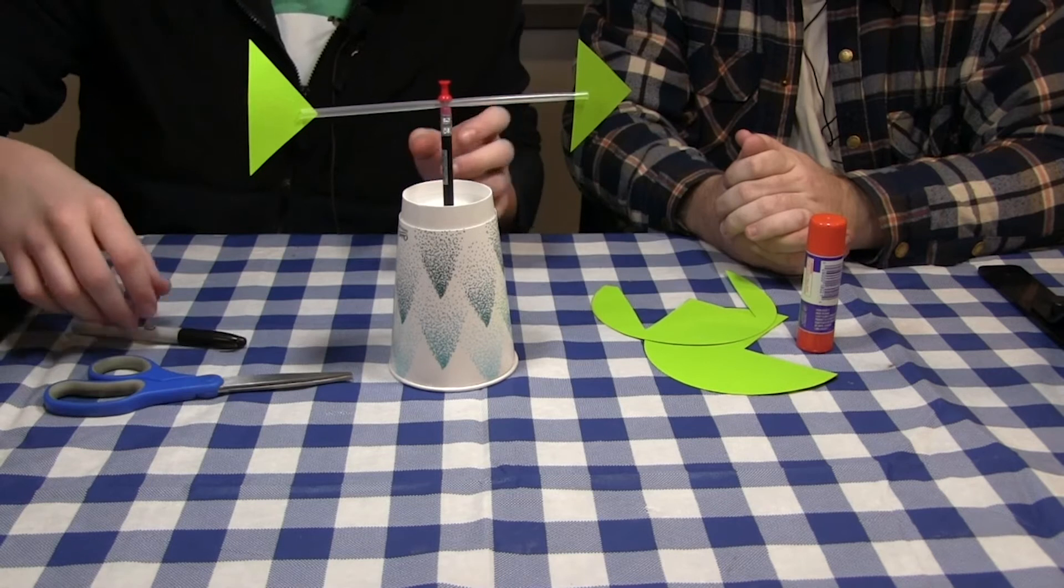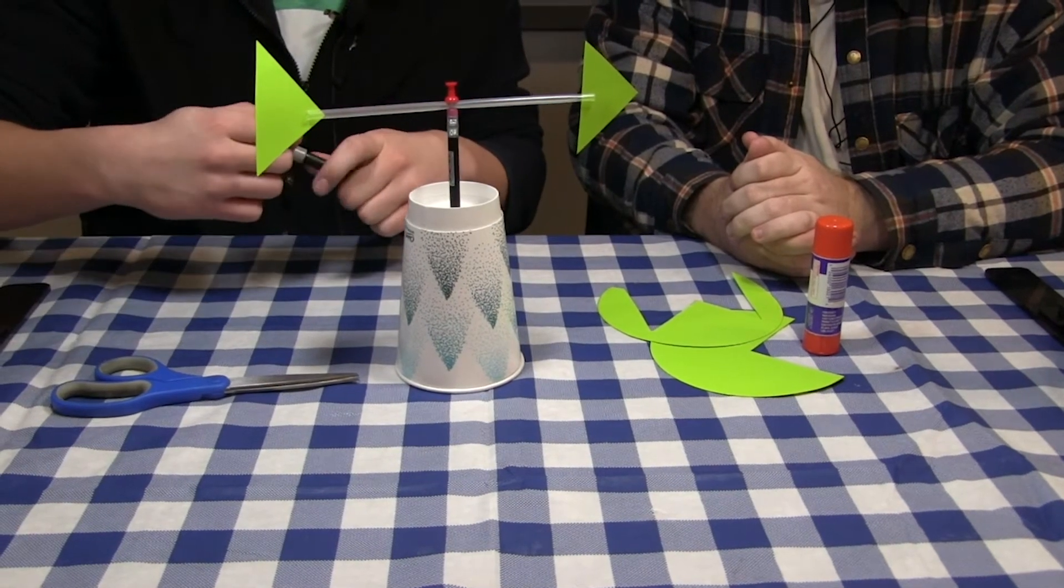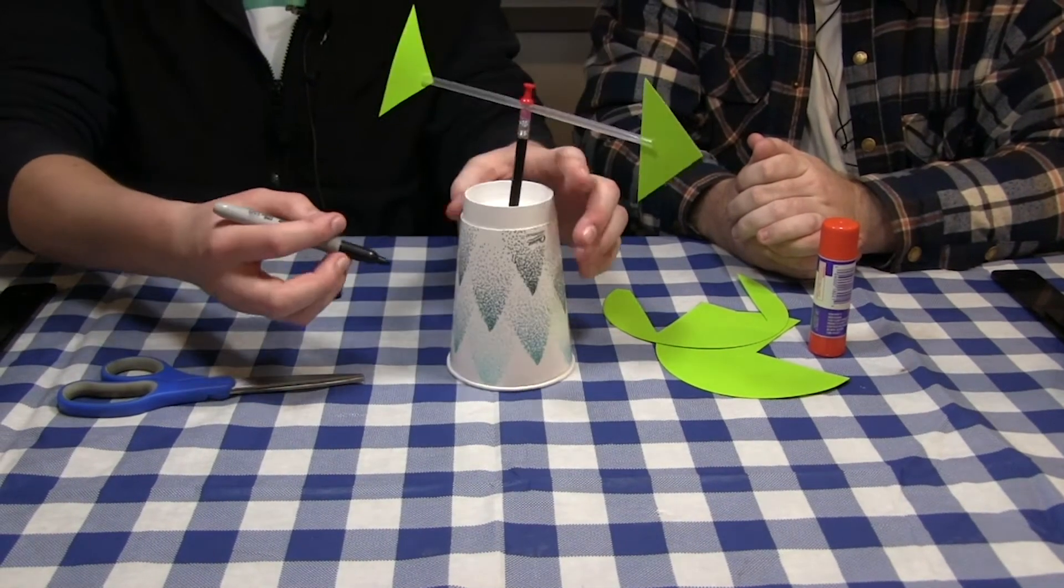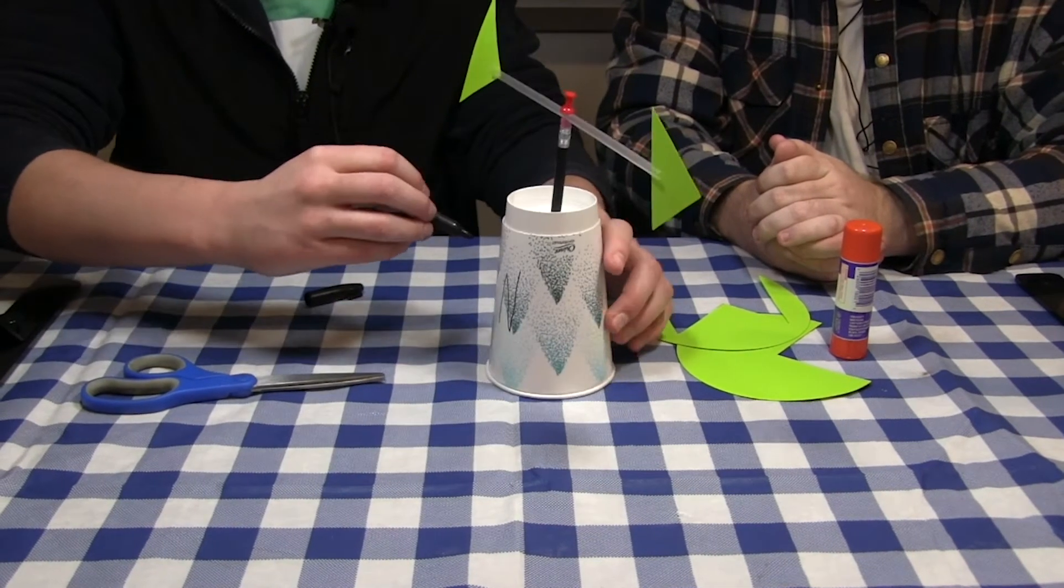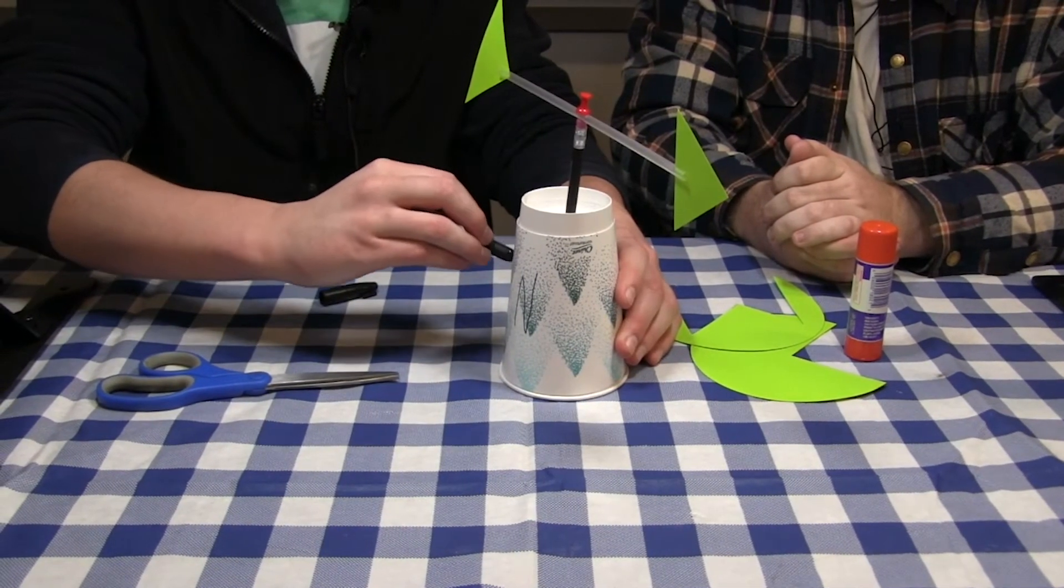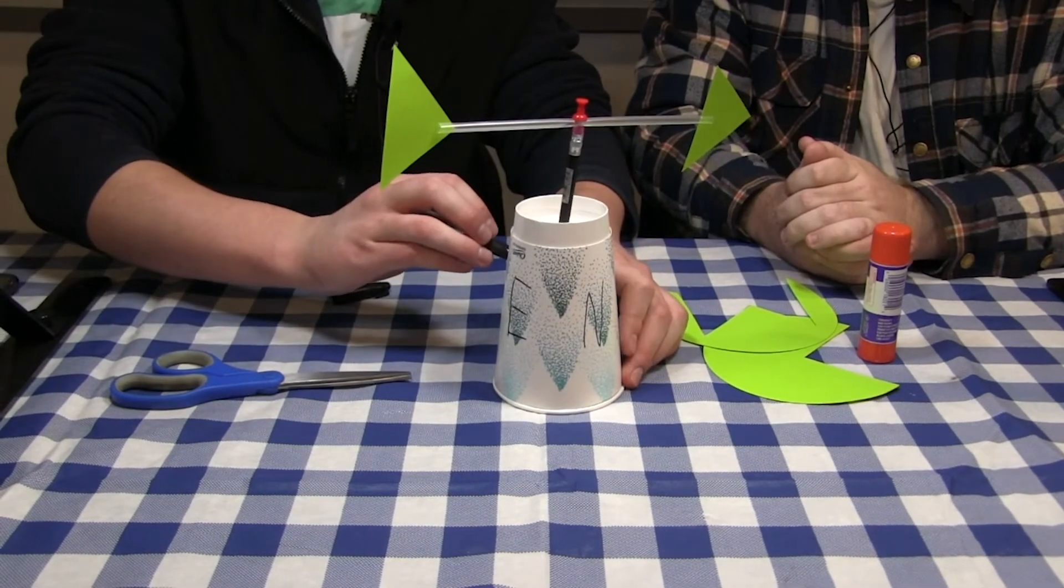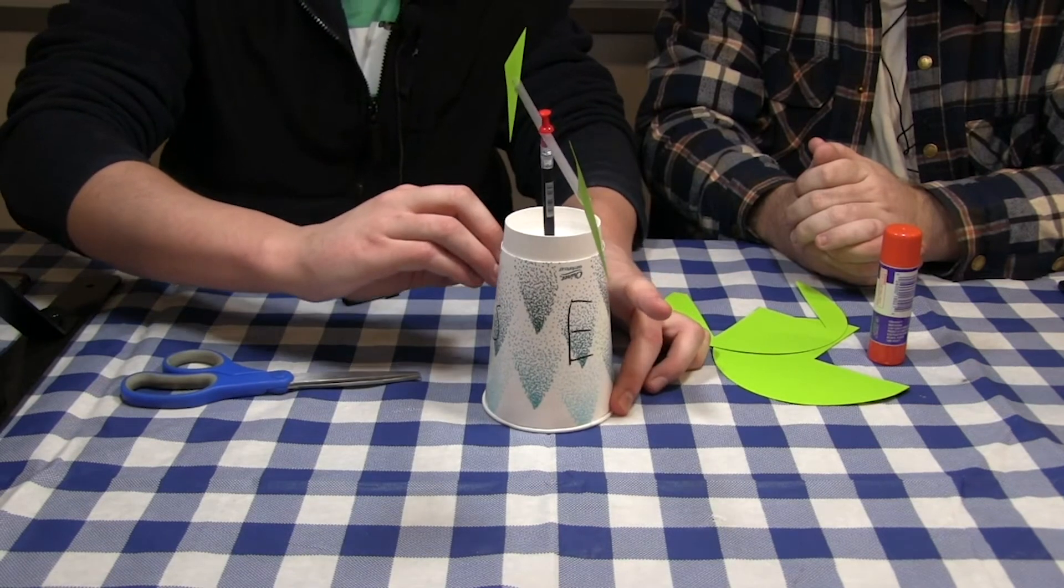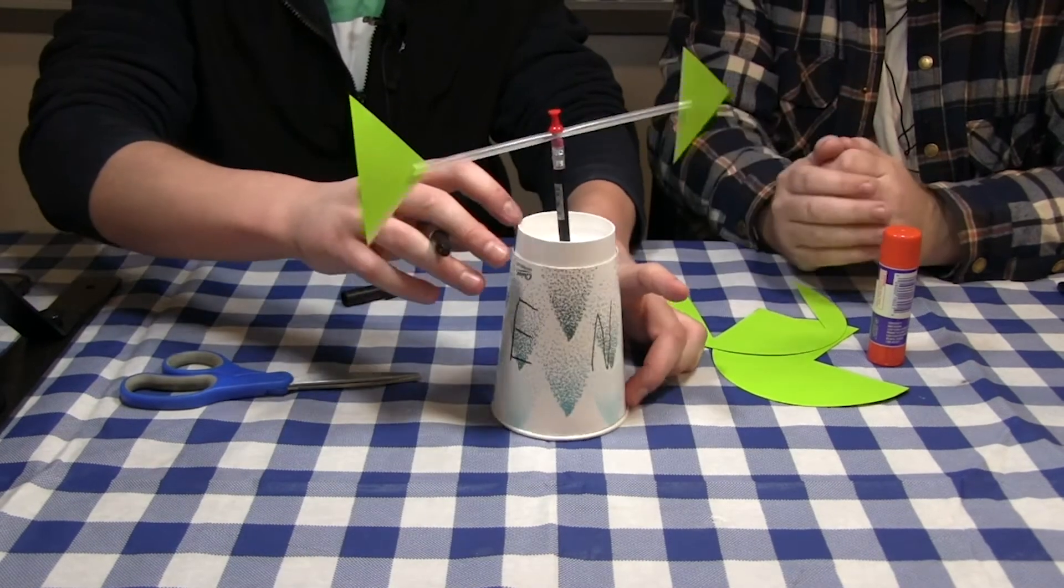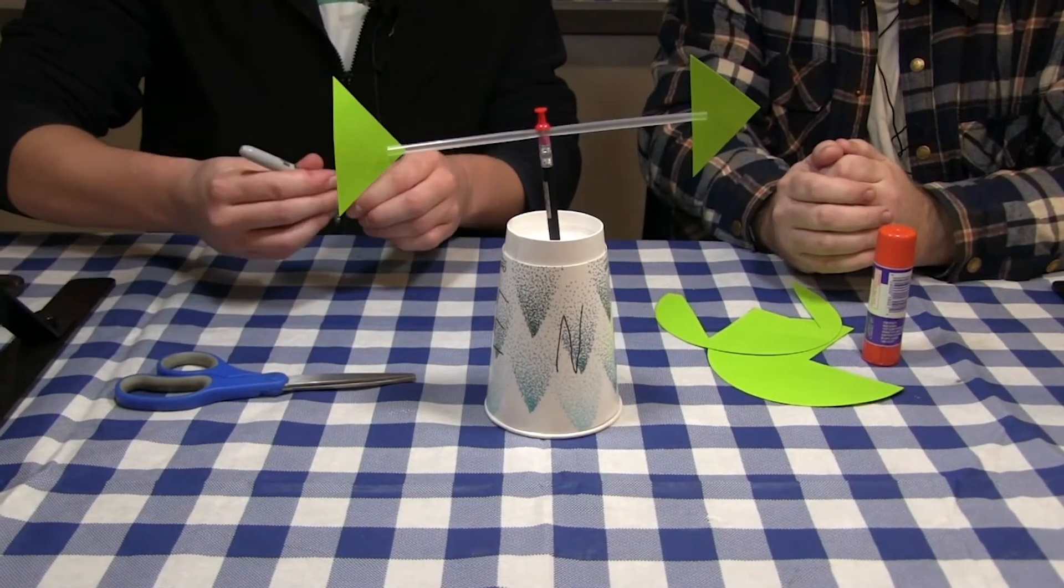We can mark north on one face of the cup, east, south, and west.